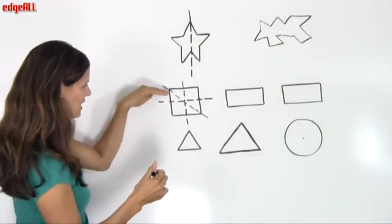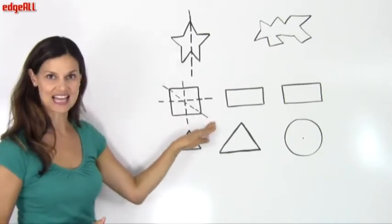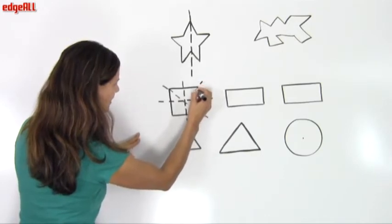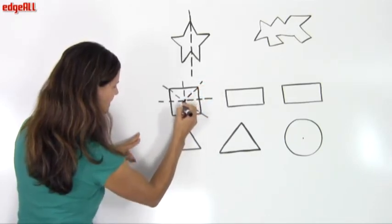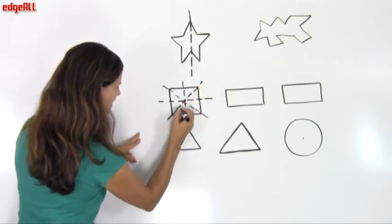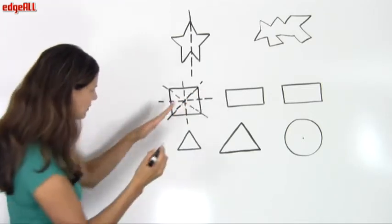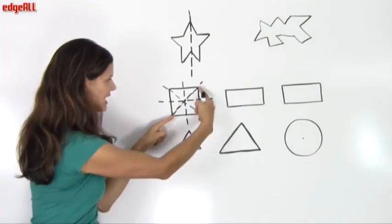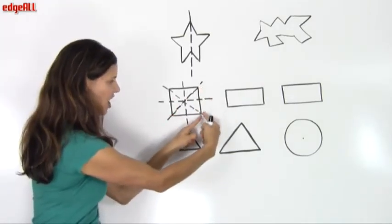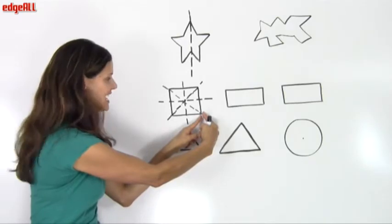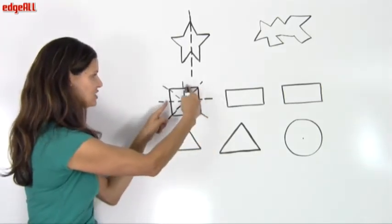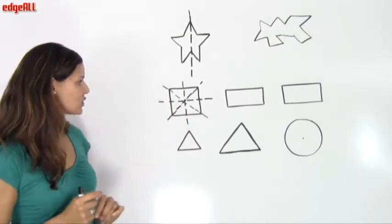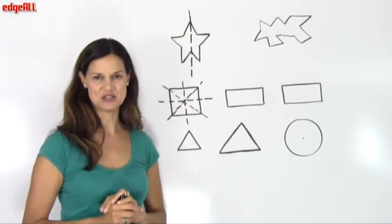In the same way, we also have this other diagonal line of symmetry in the square. If we concentrate on this line of symmetry, we can see that the shape on this side of the line is a mirror image or a reflection of the shape on the other side. So our square has four lines of symmetry.